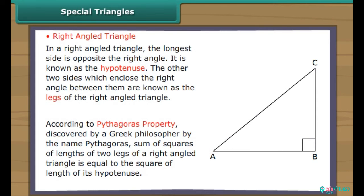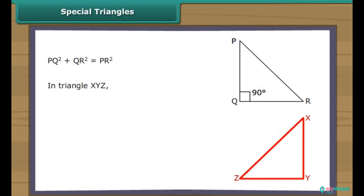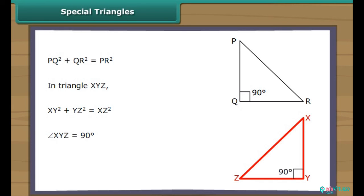According to the Pythagoras property, discovered by Greek philosopher Pythagoras, the sum of the squares of the lengths of the two legs of a right-angled triangle is equal to the square of the length of its hypotenuse. In right-angled triangle PQR, PQ squared plus QR squared equals PR squared. In triangle XYZ, given that XY squared plus YZ squared equals XZ squared, angle XYZ measures 90 degrees. Therefore, XYZ is a right-angled triangle.